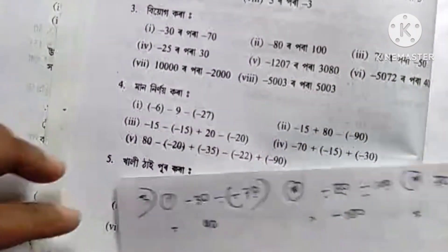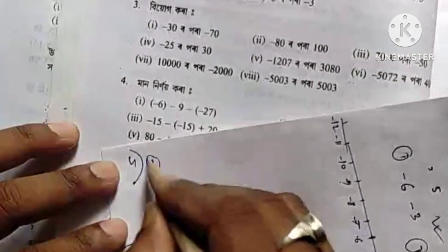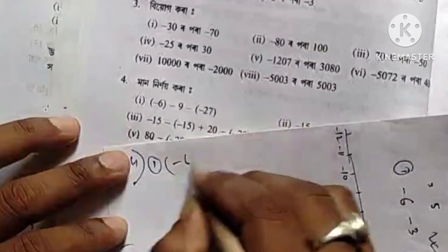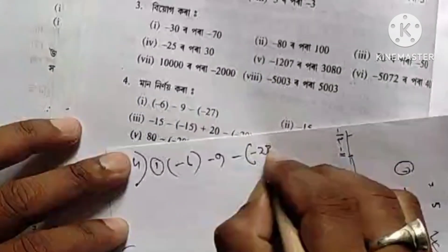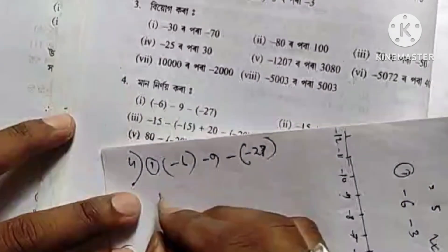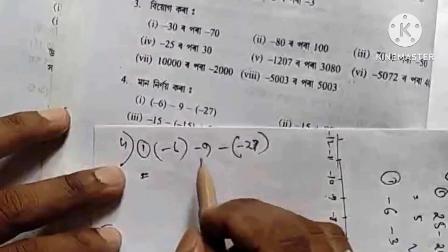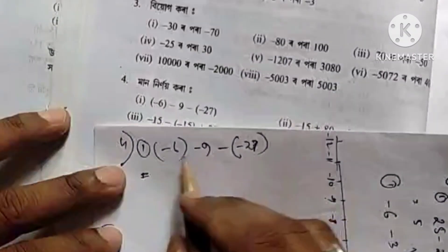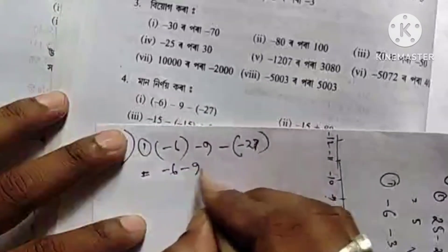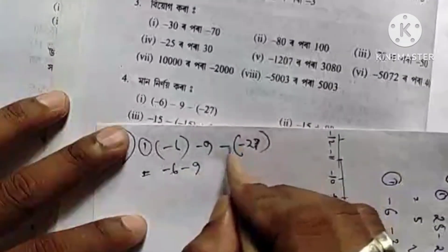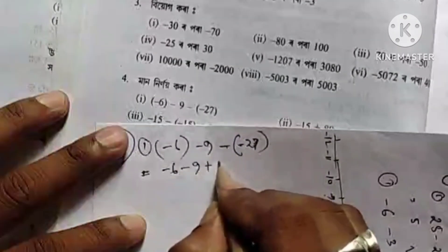49 number, the number is 1. Number 1 is minus 6, minus 9, minus minus 27. Number 1 is minus 6, minus 6, minus 9, minus 7, minus minus 7, minus minus 27.